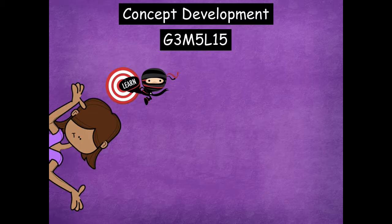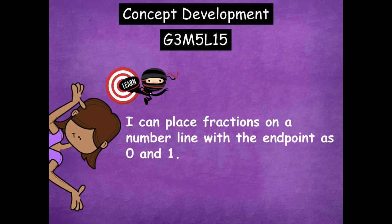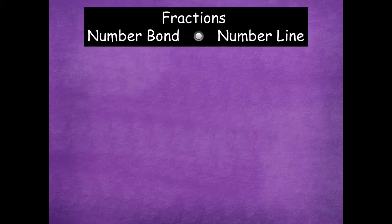Hey boys and girls, it's Mrs. Walker. Today for our lesson we're going to talk about fractions on a number line. As we're doing that, we're going to be using what we've learned about fractions with number bonds to help us. Our learning goal for today says: I can place fractions on a number line with the endpoints as 0 and 1. So everything we're doing will be a fraction between 0 and 1, nothing larger than 1 for today's lesson.